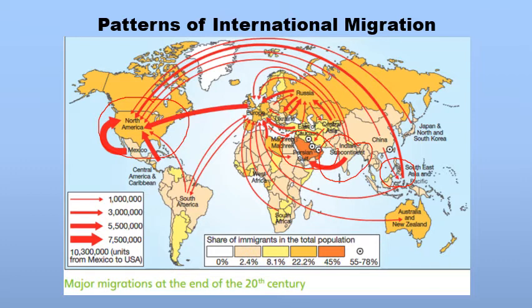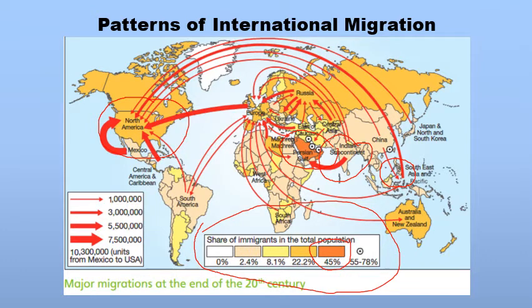The map key in the middle shows the shares of migrants in the national population of different countries. For example, the brown color indicates more than 45% of people living in a country are migrants. You can see Saudi Arabia and Oman — in Saudi Arabia's population, more than 45% of the people are outside workers who have migrated into that country.